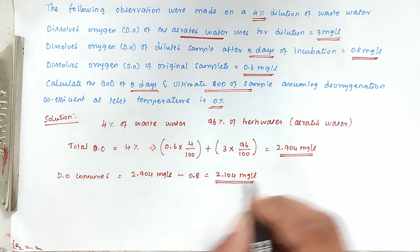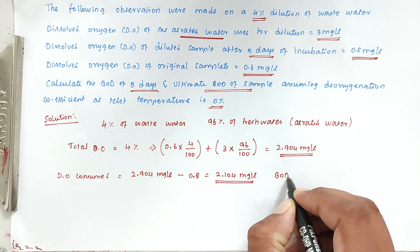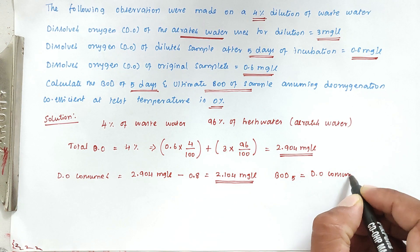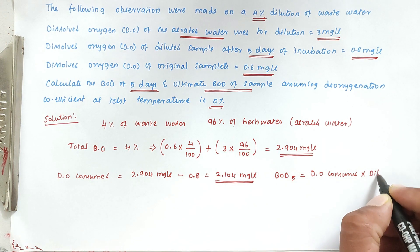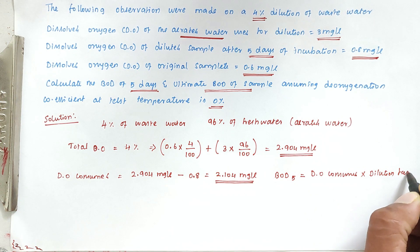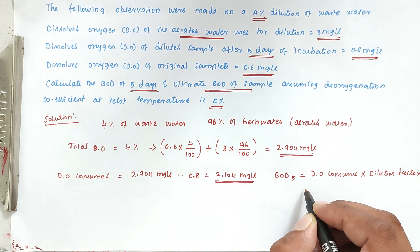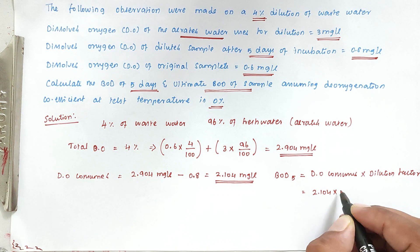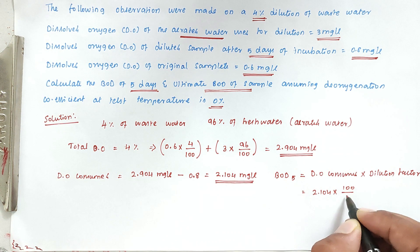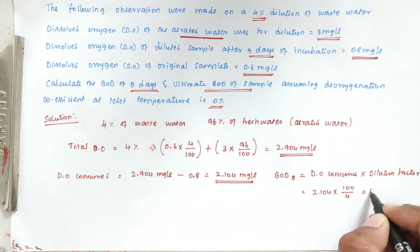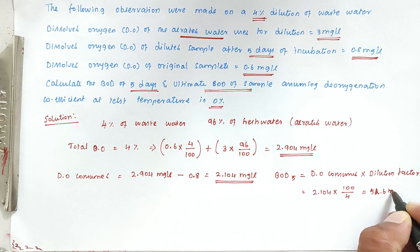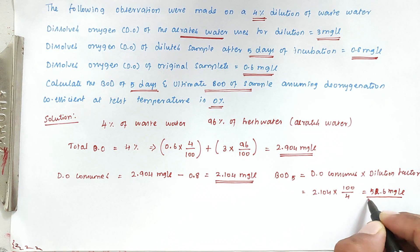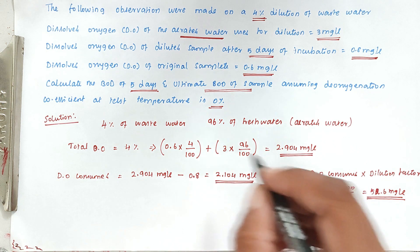Now we can calculate the BOD after 5 days. The formula is: BOD₅ = dissolved oxygen consumed × dilution factor. So: 2.104 × (100/4) = 52.6 mg per litre. After 5 days, the BOD is 52.6 mg per litre. This is the first question answer.